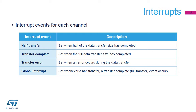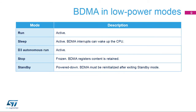The half-transfer interrupt flag is set when half the data has been transferred. The transfer-complete flag is set when the transfer is complete. The transfer-error flag is set when an error occurs during the data transfer. The global-interrupt flag is set whenever a half-transfer, transfer-complete, or full-transfer event occurs.